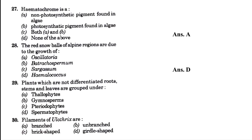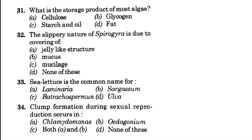Plants which are not differentiated into roots, stems, and leaves are grouped under — blank: Thallophyta, Gymnosperm, Pteridophyta, or Spermatophytes. The answer is option A, that is Thallophytes. Filaments of Ulothrix are — blank: branched, unbranched, brick-shaped, or bridal-shaped. The answer is option B, that is unbranched. What is the storage product of most algae? Cellulose, glycogen, starch and oil, or fat. The answer is option C, that is starch and oil. The slippery nature of Spirogyra is due to the covering of — blank: jelly-like structure, mucus, mucilage, or none of the above. The answer is option C, that is mucilage.